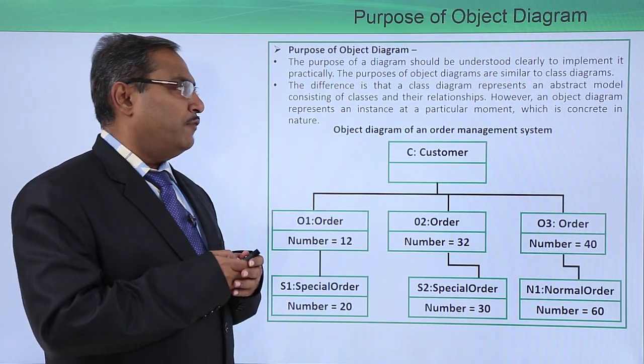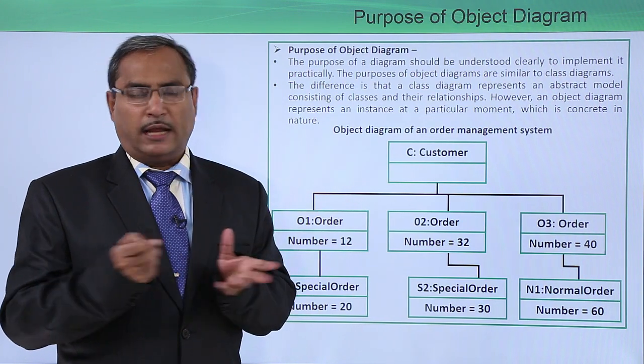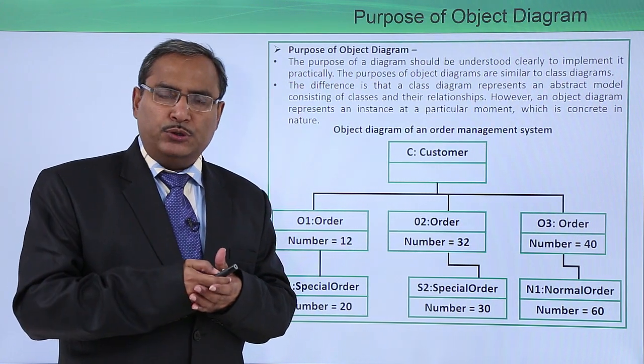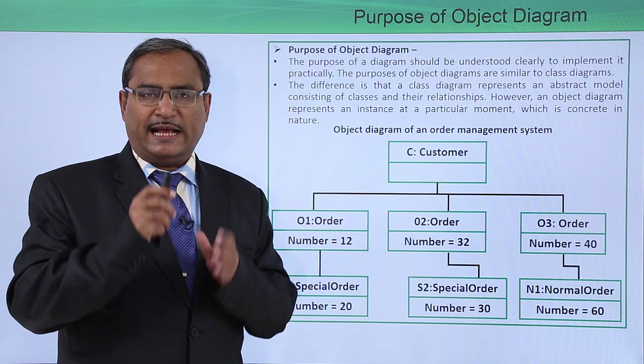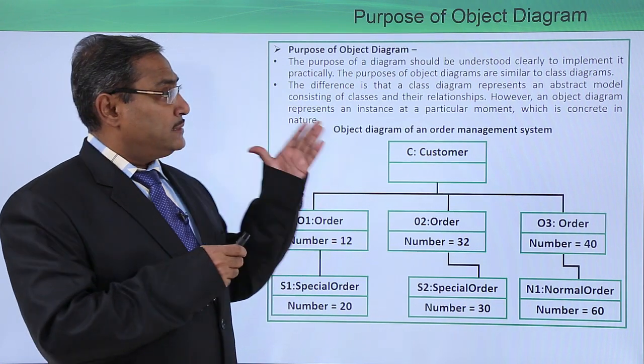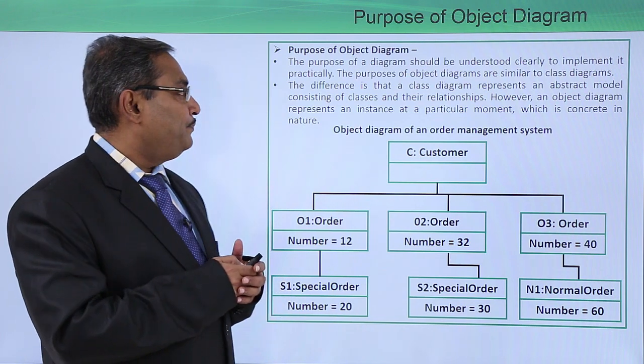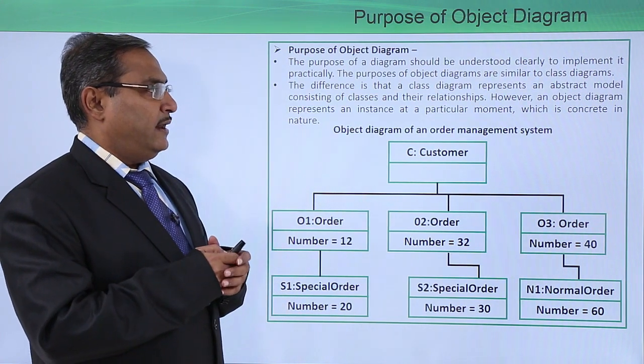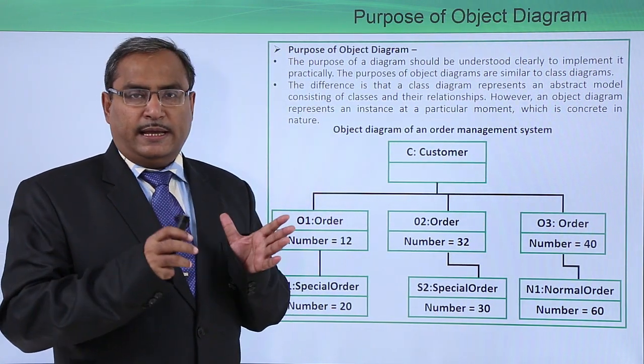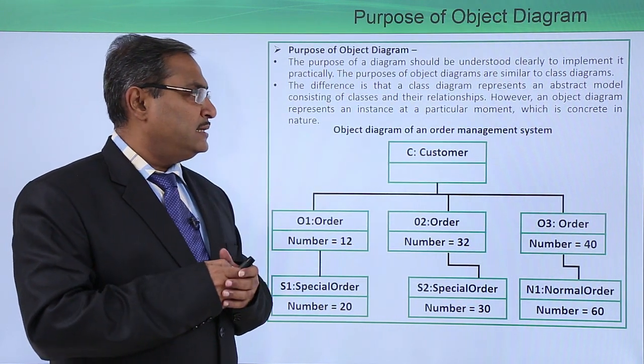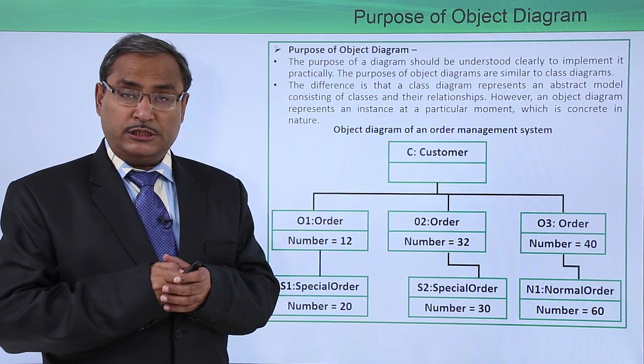The purposes of object diagrams are similar to the class diagram. The difference is that a class diagram represents an abstract model consisting of classes and their respective relationships.